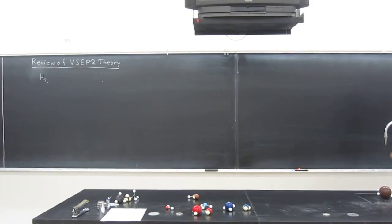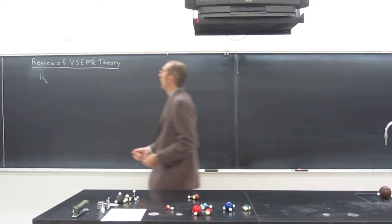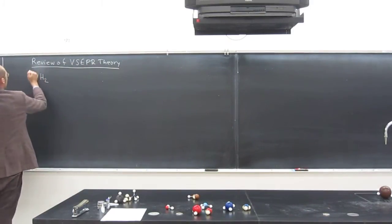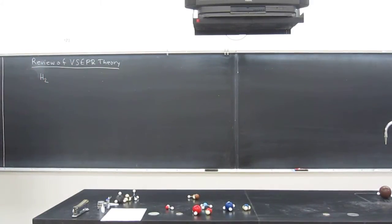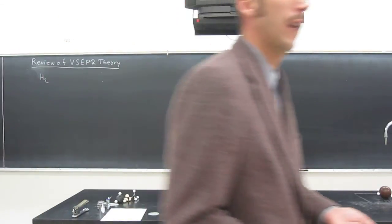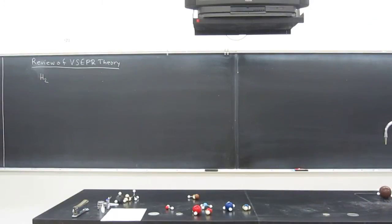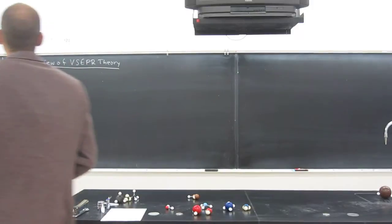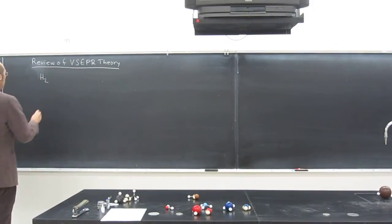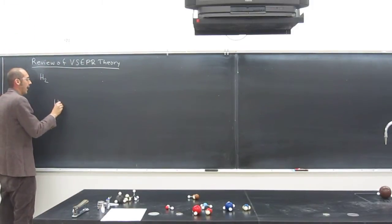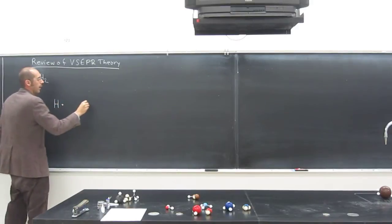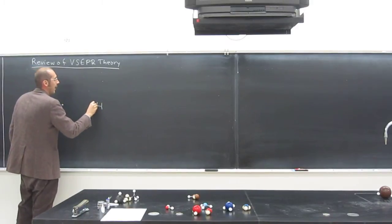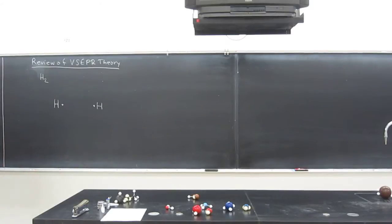So remember H2, hydrogen. Hydrogen is a diatomic gas, and we know that not only because we've memorized it, but we can look at the periodic table and we know that hydrogen has the one electron, right? And each one of those hydrogen atoms has an electron. And are atoms stable? How do atoms become stable again? Can you guys remind me?